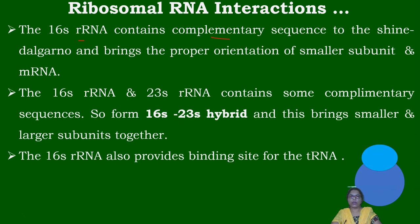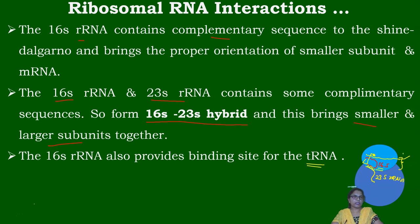The Shine-Dalgarno sequence on mRNA helps in binding to the 16S rRNA of the 30S subunit, which contains a complementary sequence. Additionally, 16S rRNA and 23S rRNA contain complementary sequences to each other, forming a 16S–23S hybrid that helps bring the smaller and larger subunits together. The 16S rRNA also provides a binding site for tRNA.